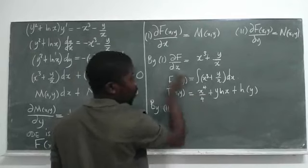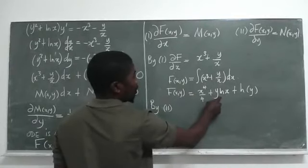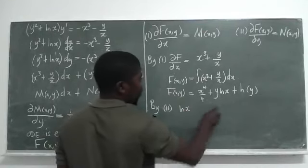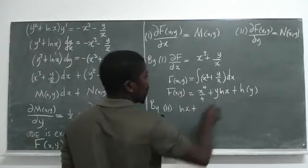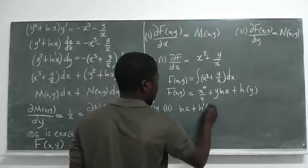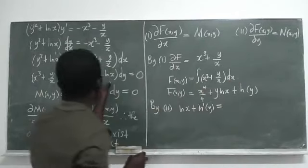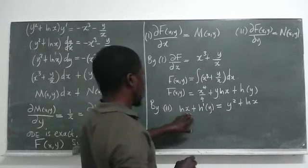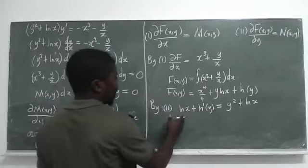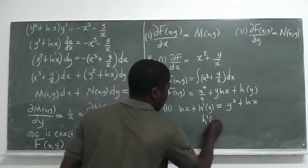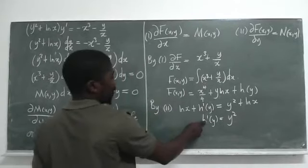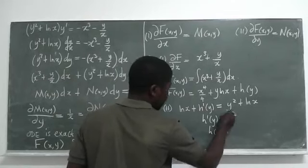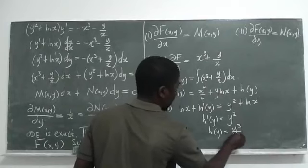Taking the partial derivative with respect to y: x to the 4th over 4 is a constant, so it becomes zero; y times ln(x) gives ln(x); and the derivative of h(y) gives h prime of y. Setting this equal to N, which is y squared plus ln(x), the ln(x) terms cancel, leaving h prime of y equals y squared. Integrating gives h(y) equal to y cubed over 3.